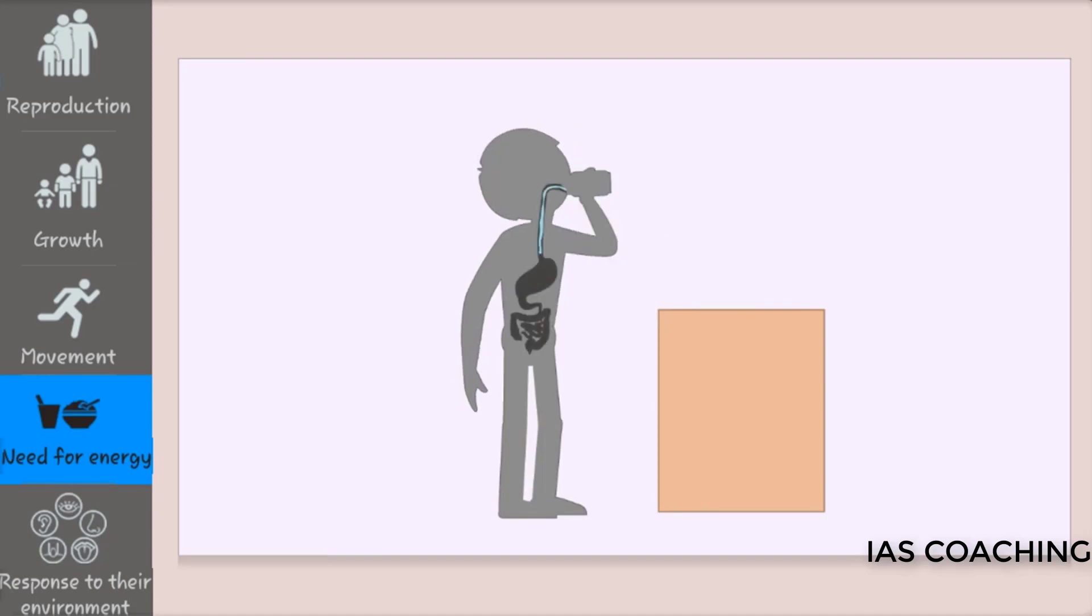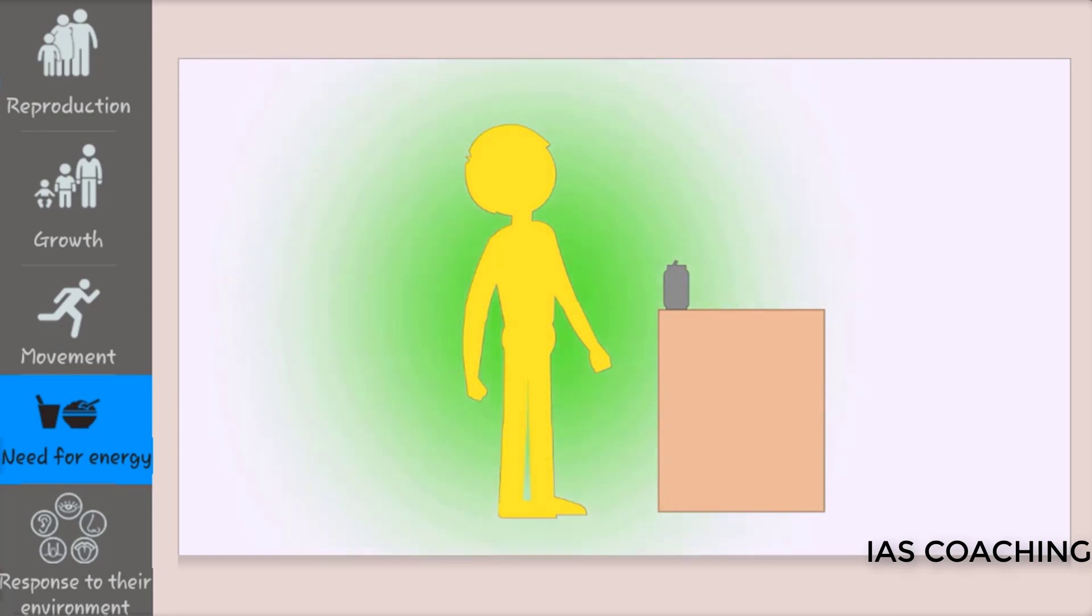Human beings get their energy from food which is absorbed and digested inside the body. The food is converted into glucose which is then carried to the cells. Cells process the glucose to generate energy in the form of a chemical called ATP.